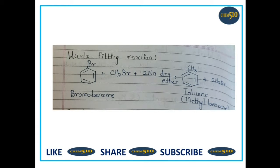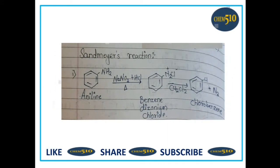Wurtz reaction is a chemical reaction of aryl halide with alkyl halide and sodium metal in presence of dry ether to give a substituted aromatic compound. In this example, aryl halide is bromobenzene, alkyl halide is methyl bromide; in presence of dry ether it forms toluene (methyl benzene), and NaBr is a byproduct.